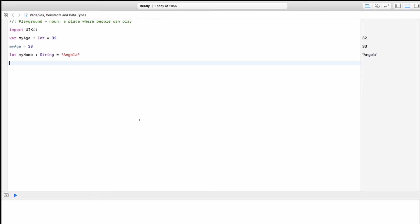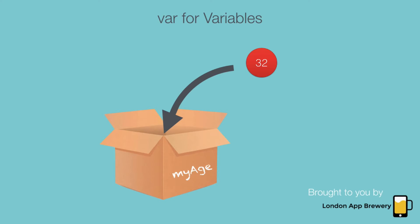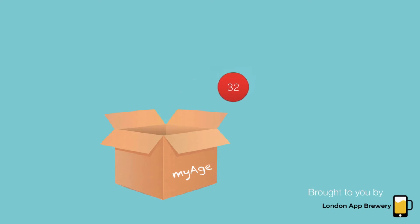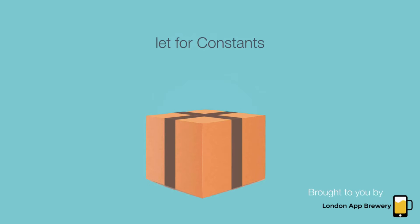Think of variables and constants as containers or boxes that can hold values. Variables are essentially boxes with an open lid — you can put in a new value and then take it out and put in a different value if needed. Constants are boxes that only allow you to put in a value once; afterwards you seal it up and cannot change the value inside. Variables are there to keep track of the state of your app — for example, which level is the user on, how many monsters have they killed. But constants hold data that never changes, such as your API keys or a URL. Constants also take up less memory space than variables.